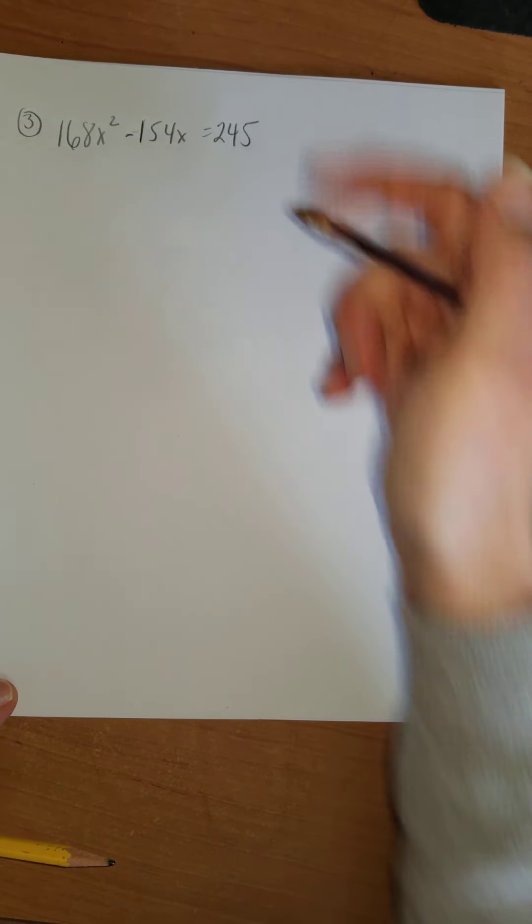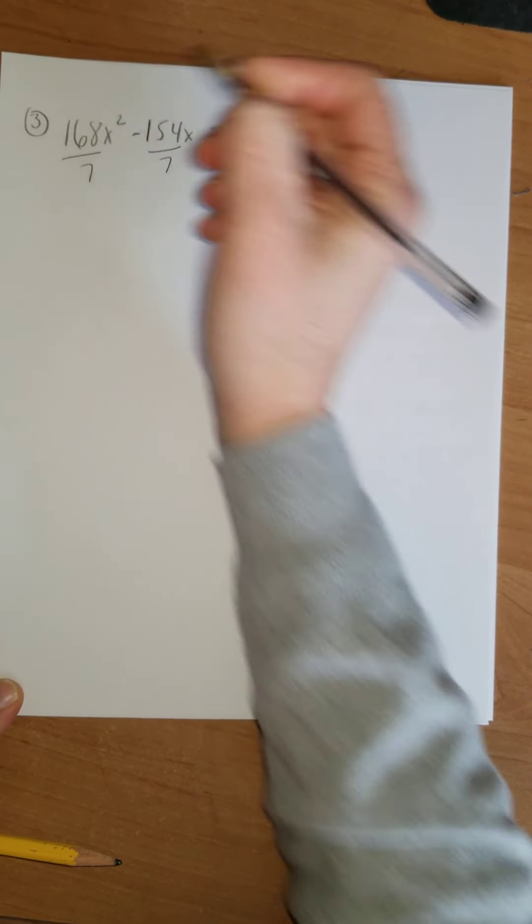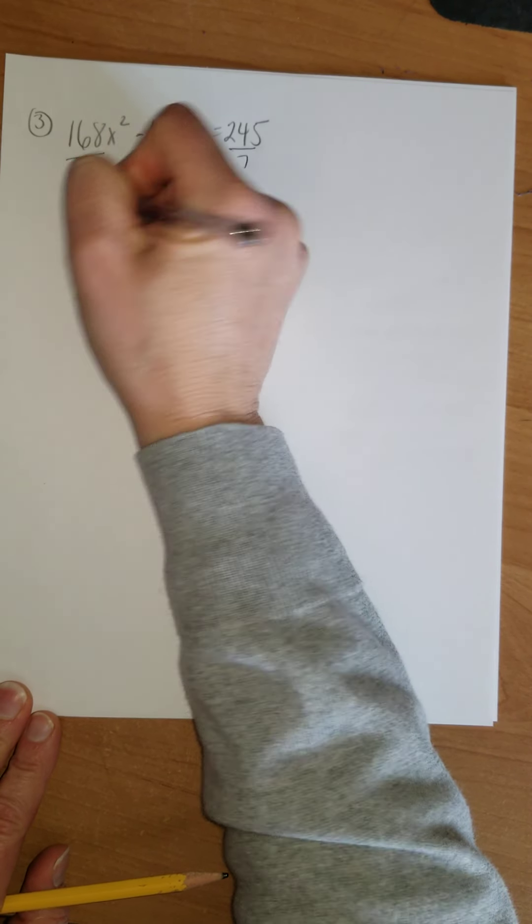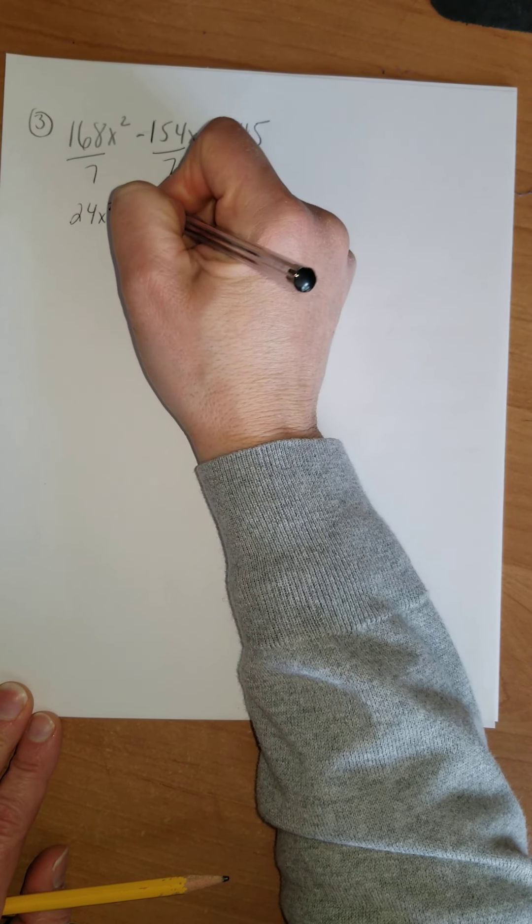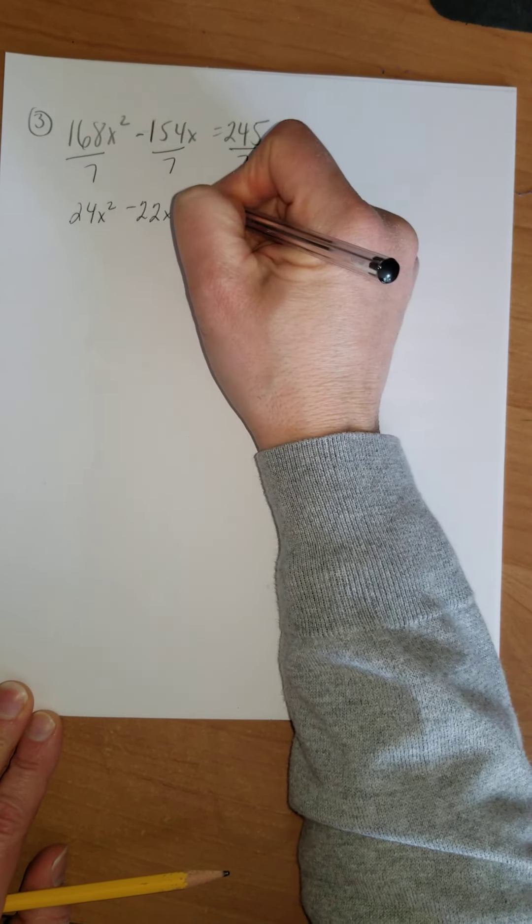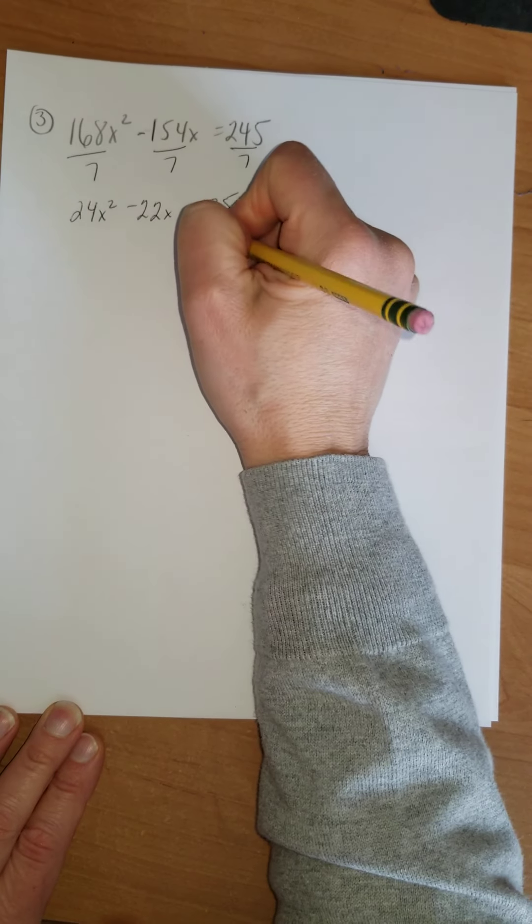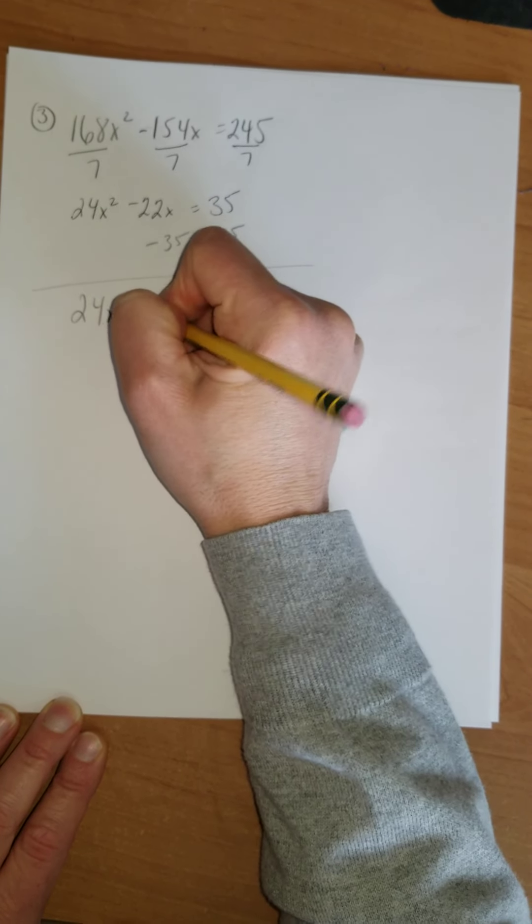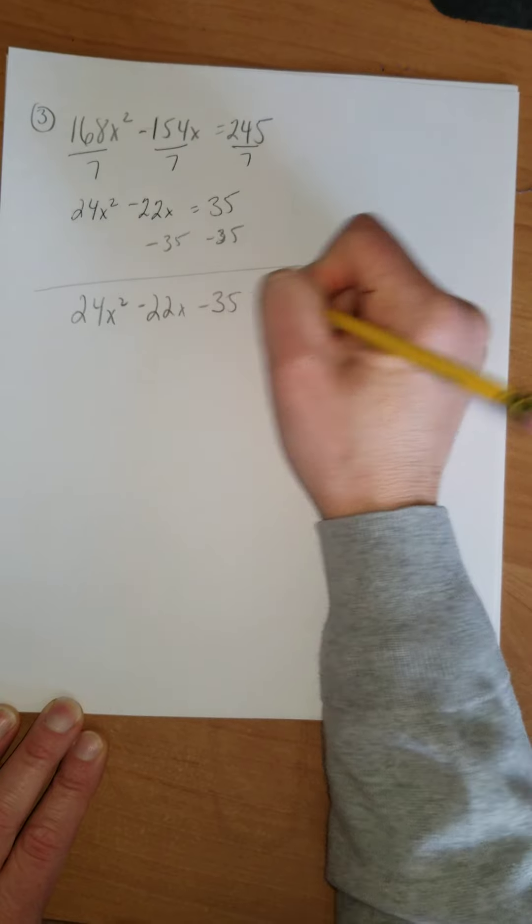168 divided by 7, that's 24. 154 divided by 7, that's 22. 245 divided by 7, that's 35. Let's divide everything by 7. So 168 divided by 7, this is 24x². 154 divided by 7, this is minus 22x, and that's going to equal 35. Let's subtract 35. So I'm going to have 24x² - 22x - 35, and that equals 0.